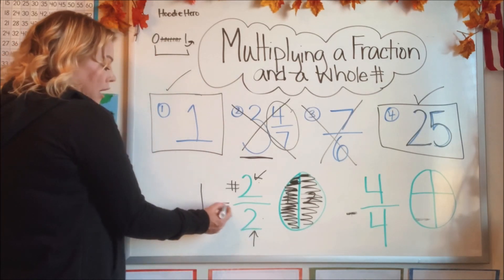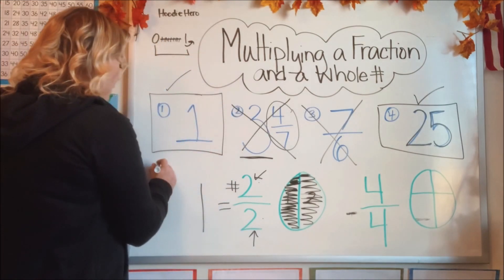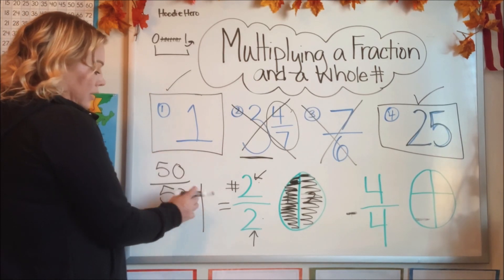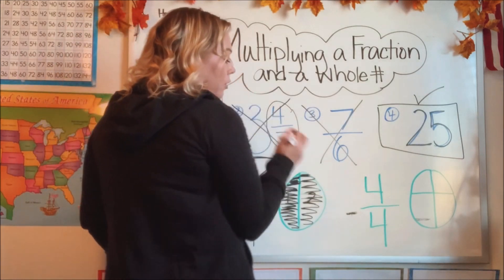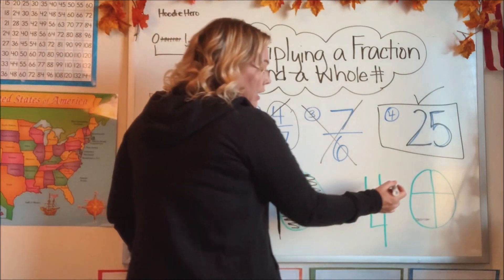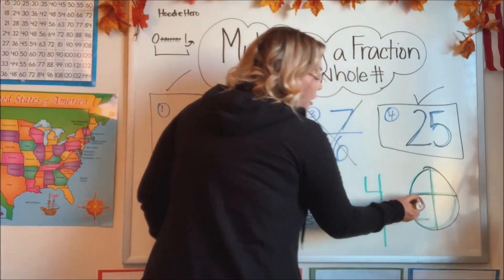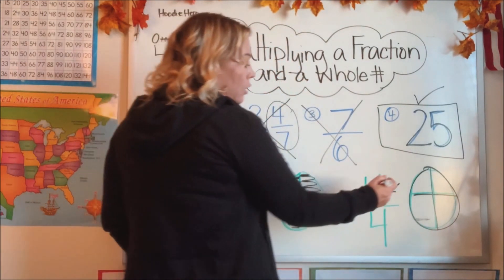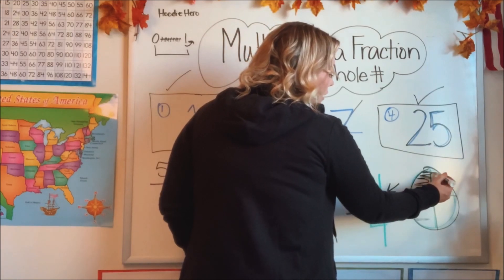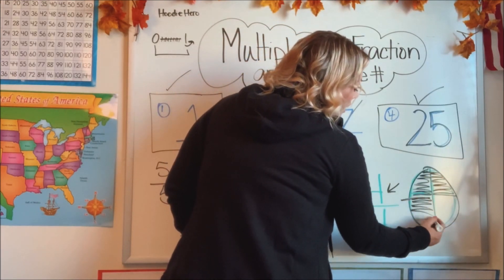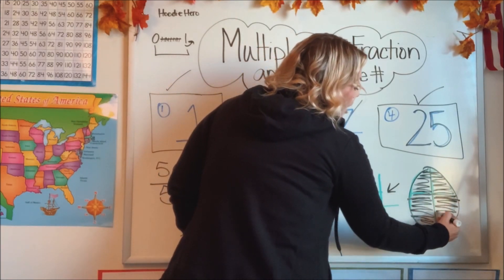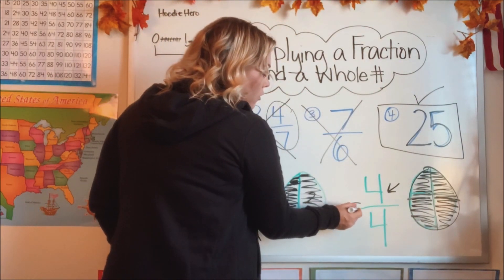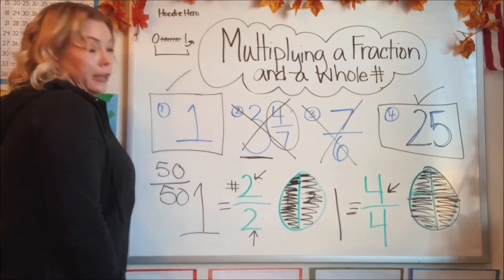Any number over itself equals one — it could be 50 over 50, that means we're talking about all the pieces, so it's one whole. Let's look at this example: we have four over four. I went ahead and drew a model with four parts, and the numerator is telling us we're talking about four parts — we have four of the four. Let's color in all four parts. Is the whole thing circled? It is — four over four equals one. Any number over itself equals one.